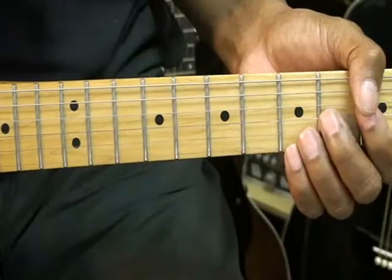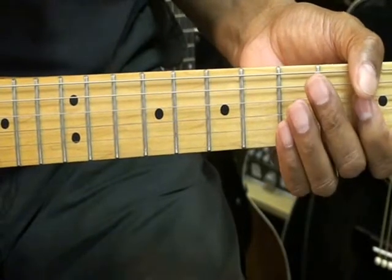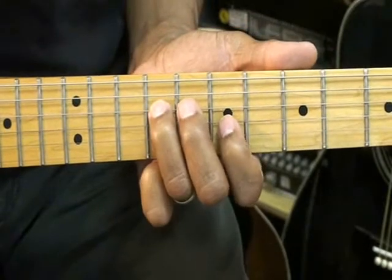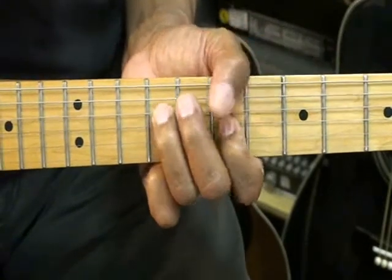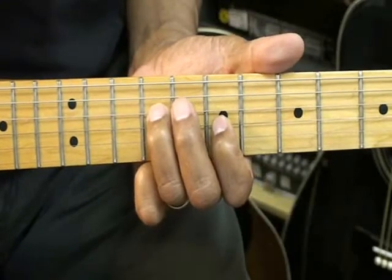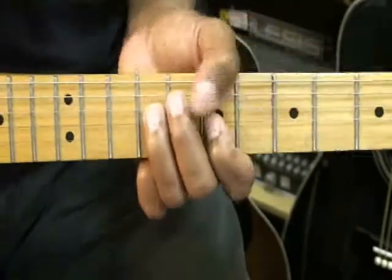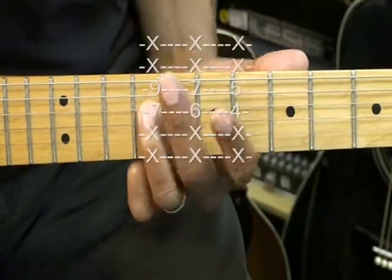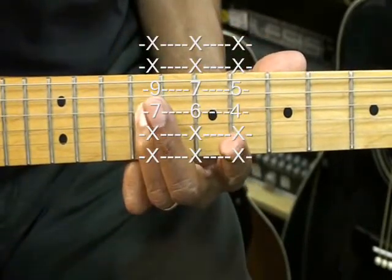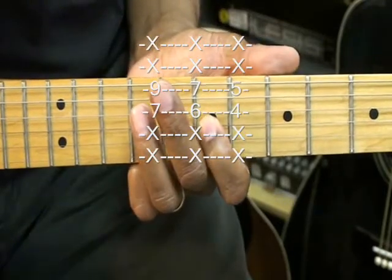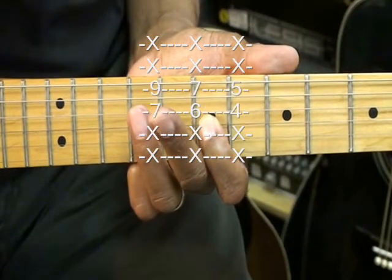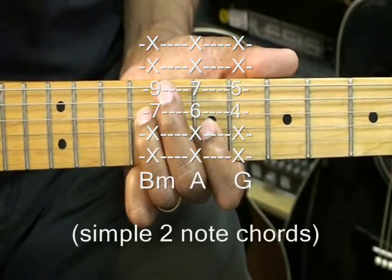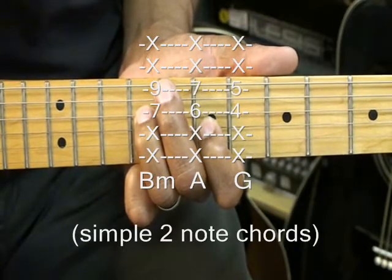Now we're going to look at some little funky two note chords. We're going to go to a B minor which is here. That's B and that's D right there. And that makes a simple B minor chord. That's B and D right there. B is on the D string at the 9th fret, and D is on the G string at the 7th fret. That's B minor or a simple B minor chord.